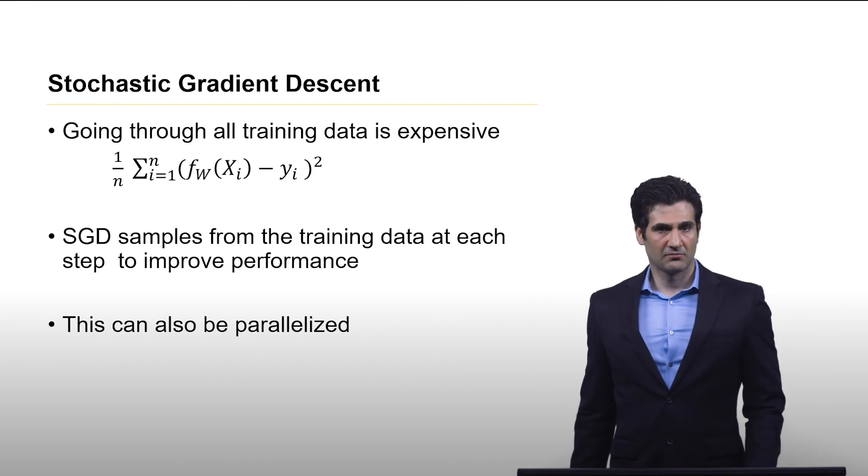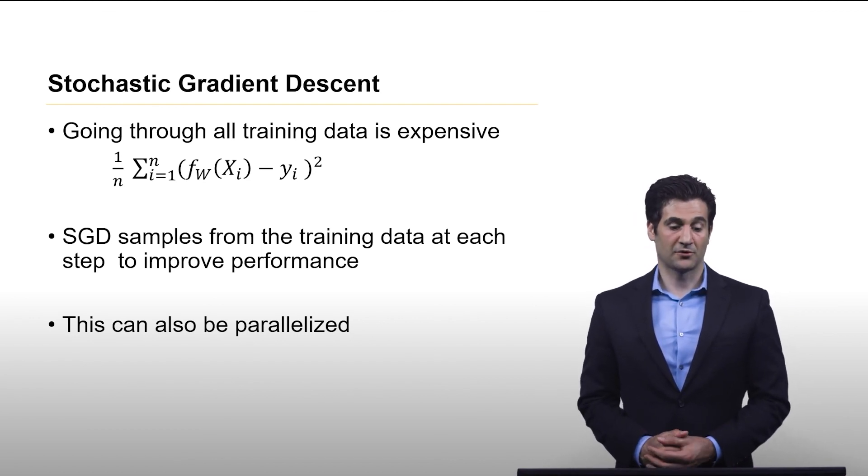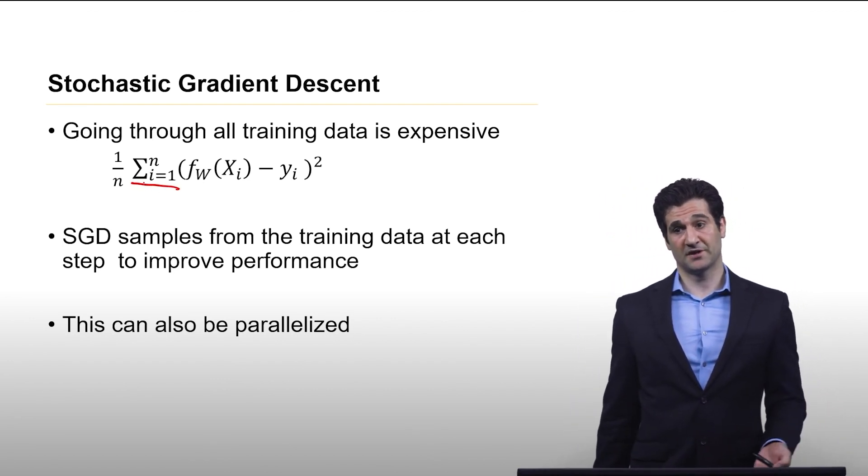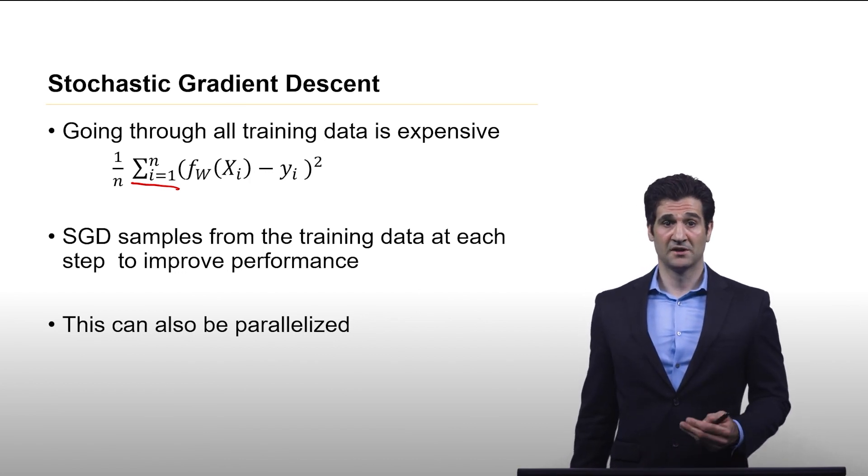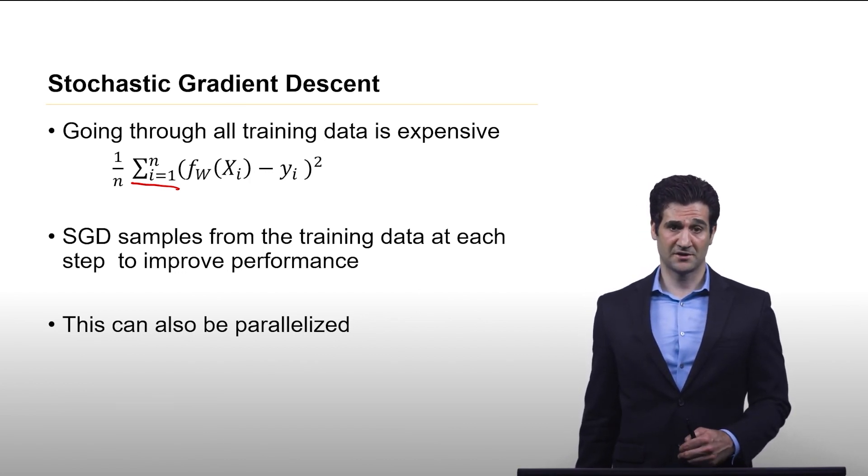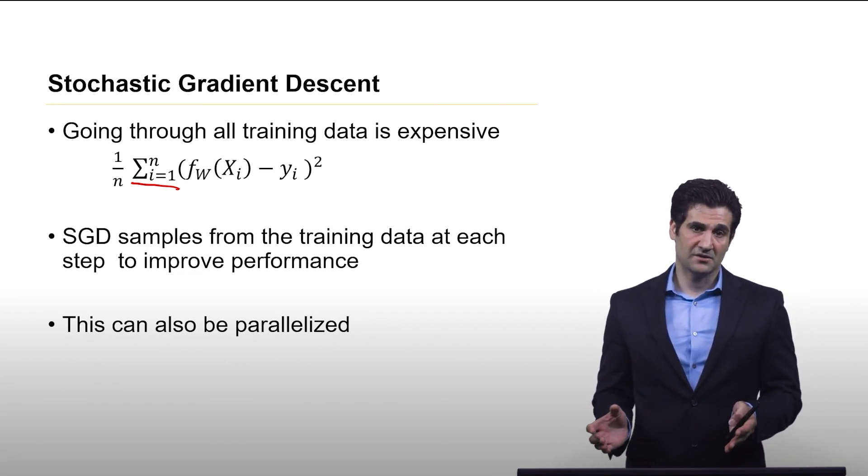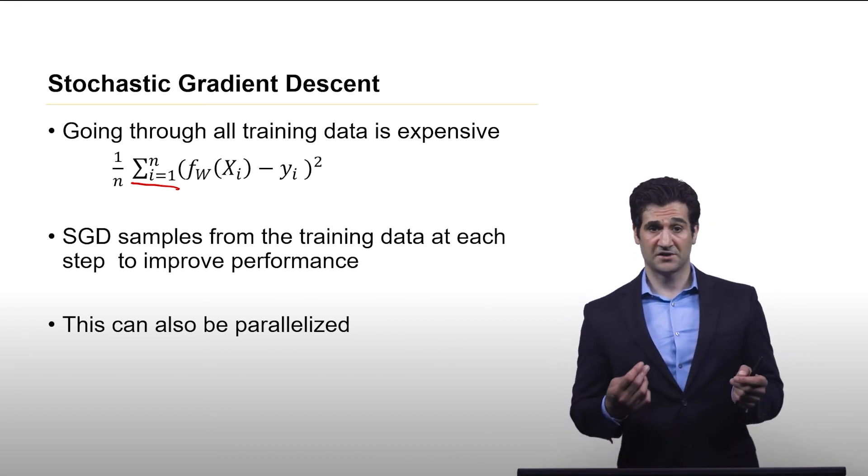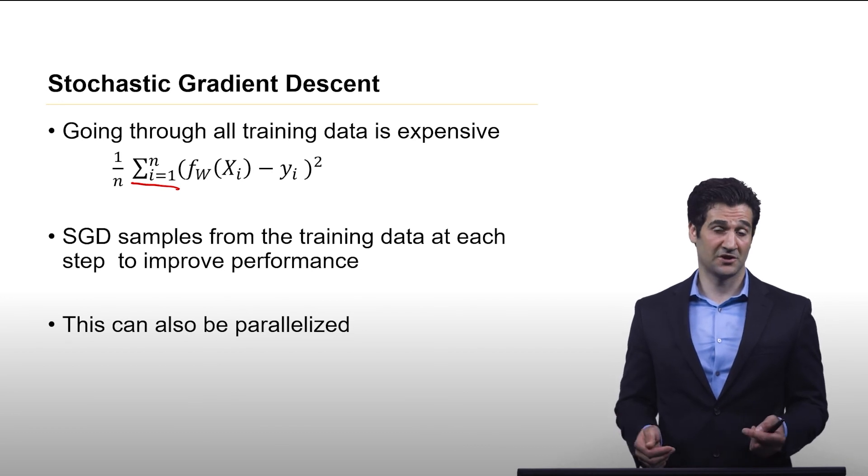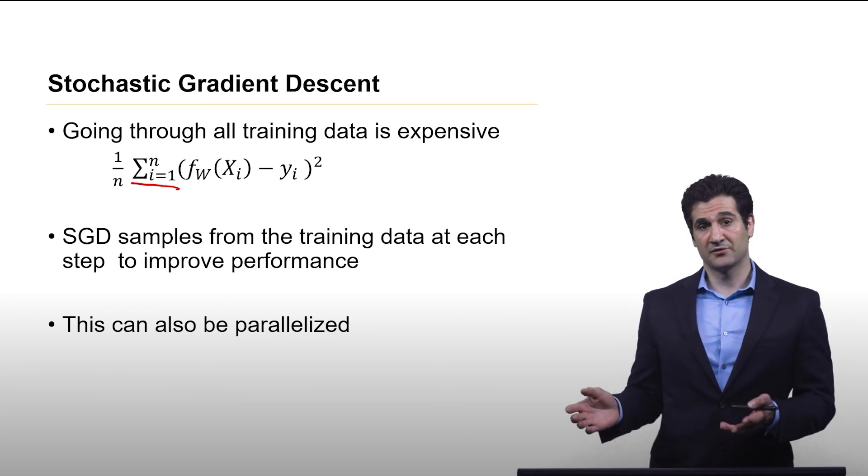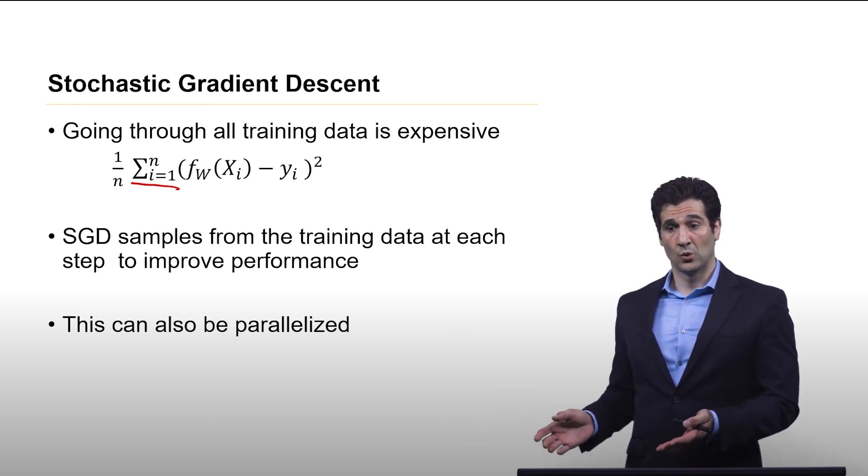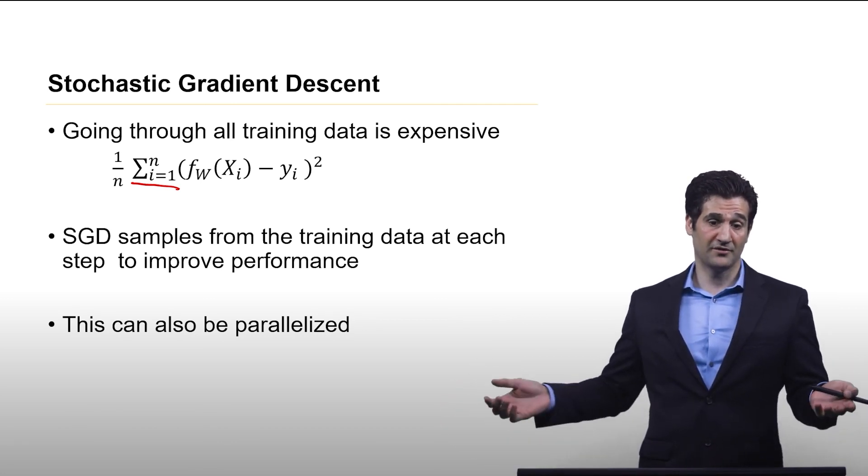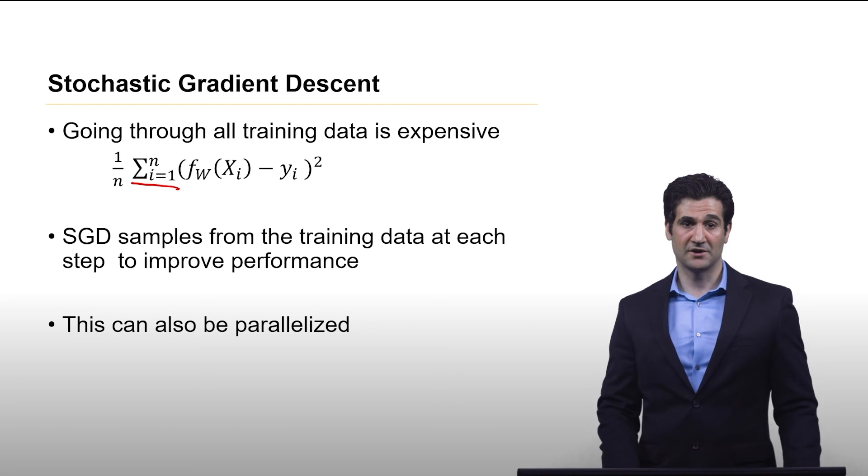So one issue with using gradient descent for mean squared error is the summation here, because you're summing over all samples. And if you have a very large amount of training data, this could become computationally expensive. The good news here is that you can do things like random sampling, which is what stochastic gradient descent is for. And separate from that, you can also do parallelization to significantly speed up the process. This becomes very important when you're looking at something like deep learning, where you could have a large number of samples. And you hear these things about companies like Google and Facebook that train their models on millions and millions of samples.